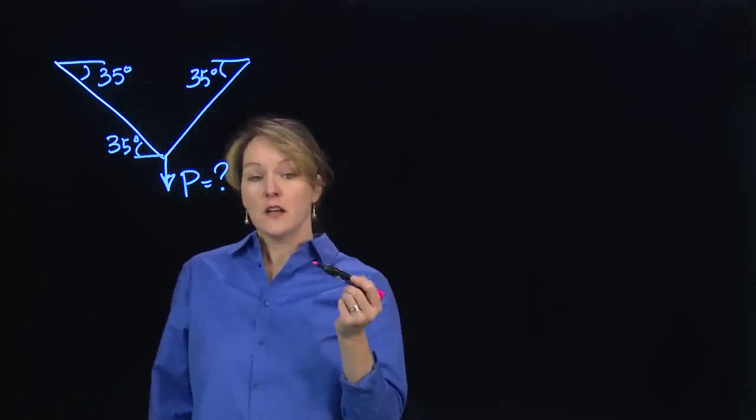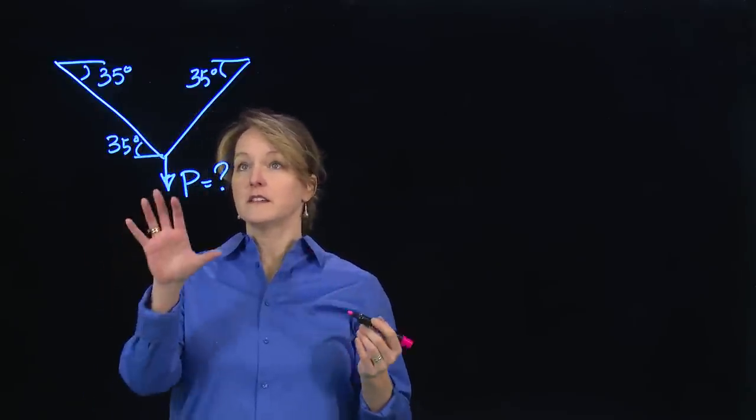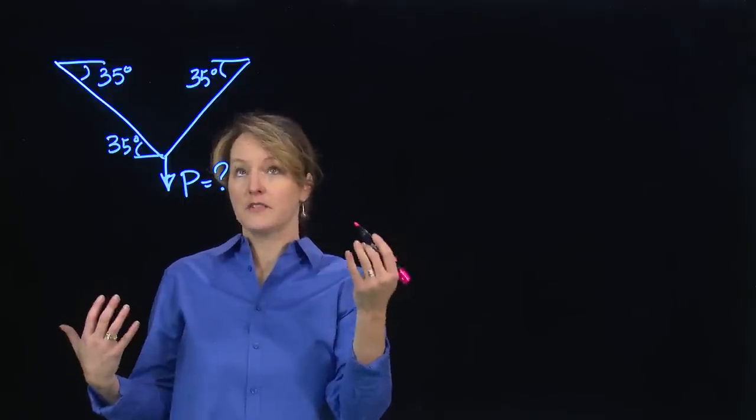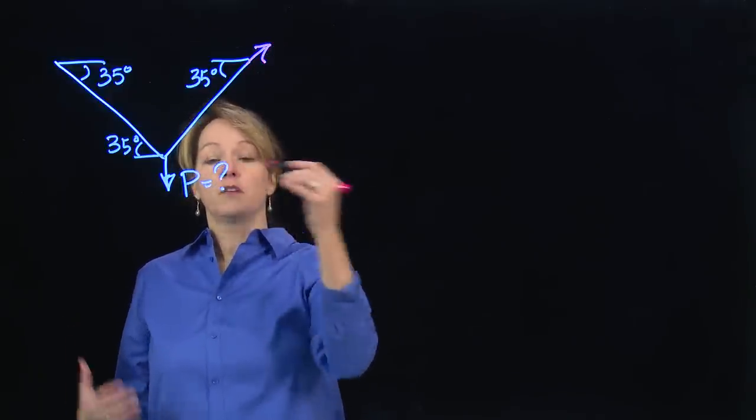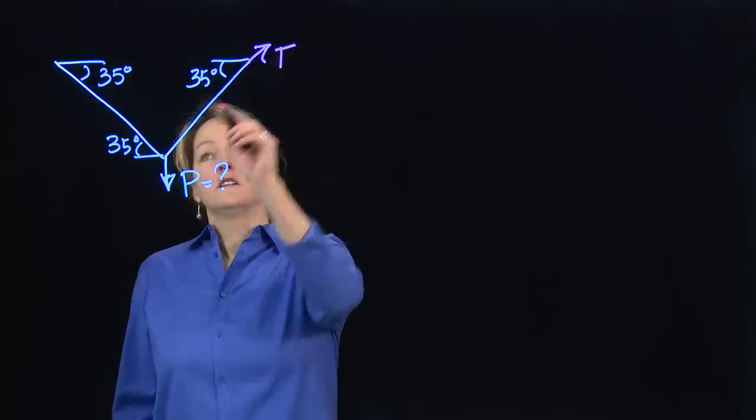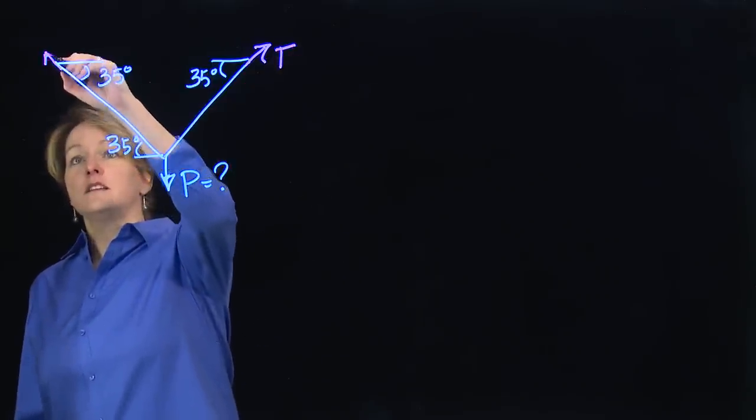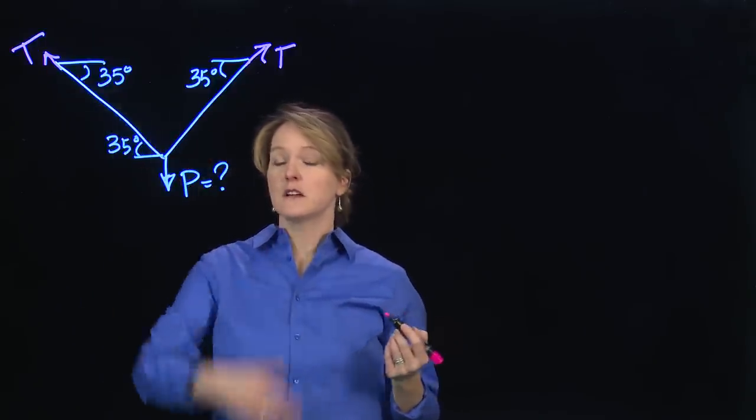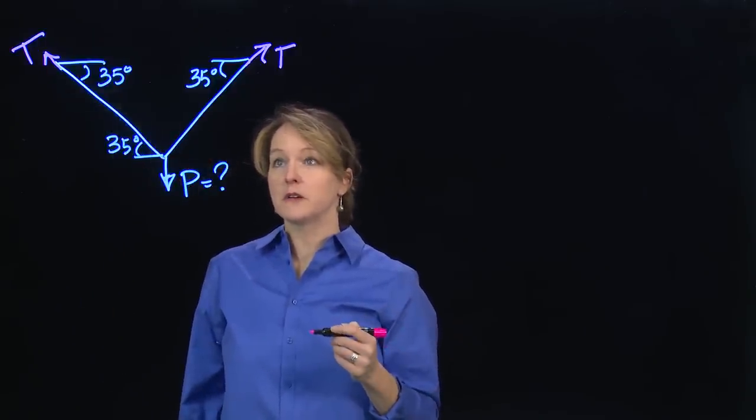The rope has a tension force in it, and we found earlier when we looked at a system with equal angles on either side that the tension force is going to have to balance in order for the horizontal forces to balance. So I'm just going to call both of these forces T. And that saves us one step. That's really just enforcing horizontal equilibrium.